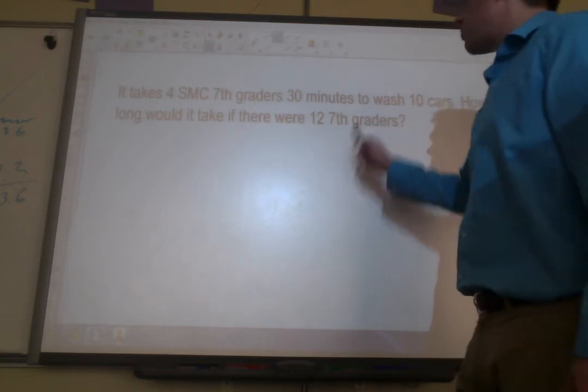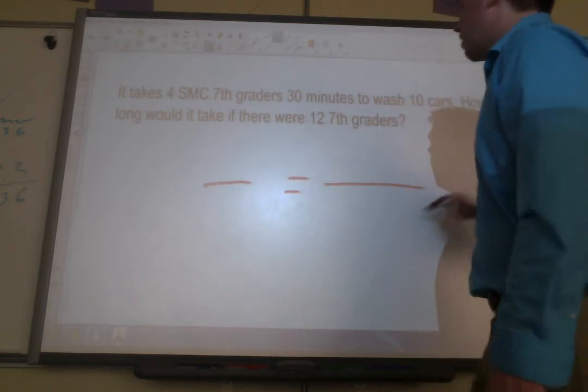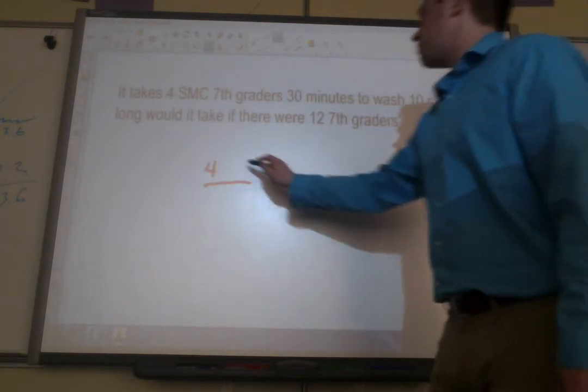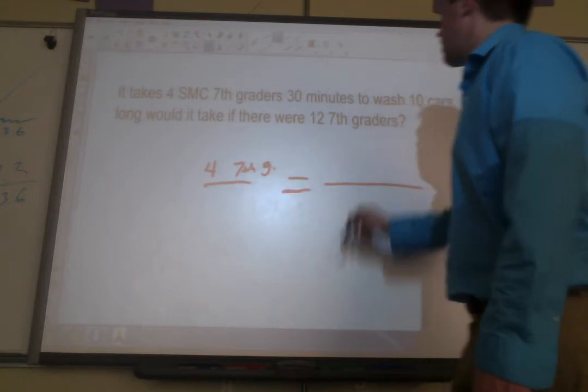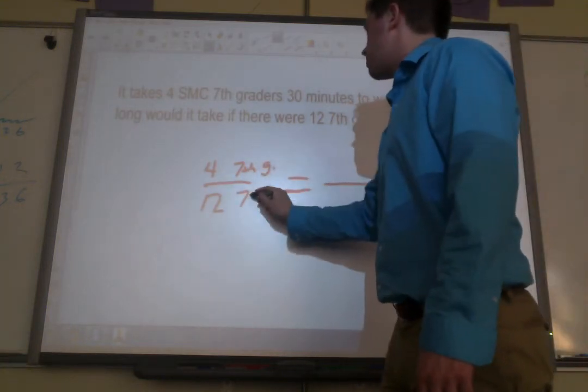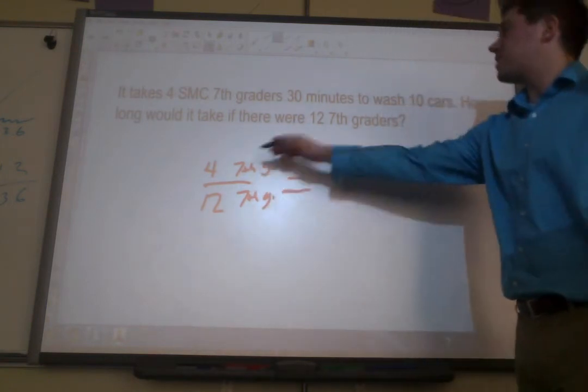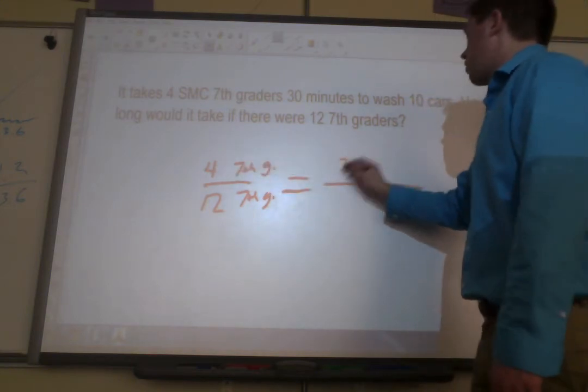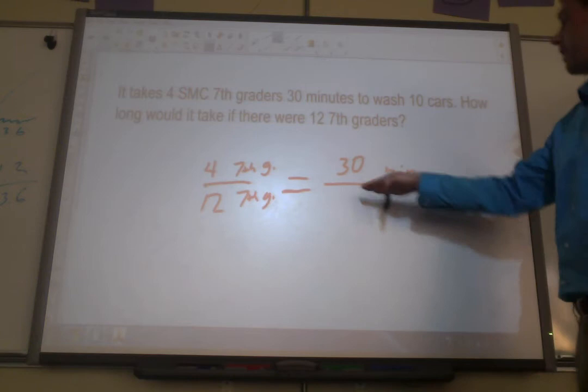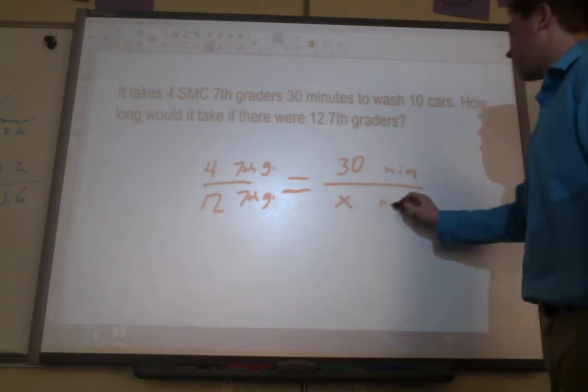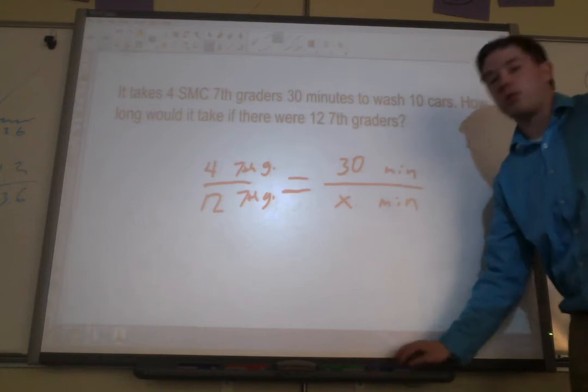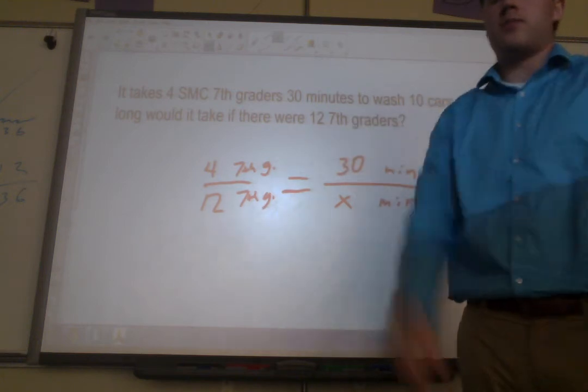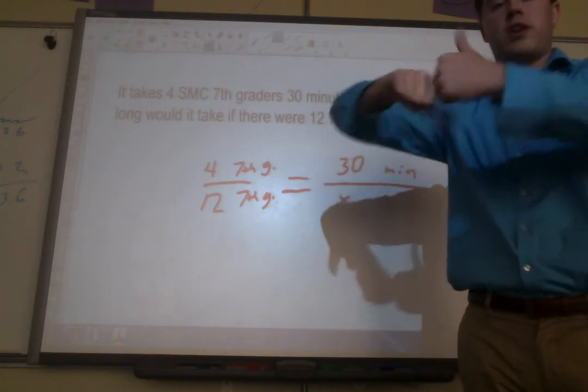Okay, so we've got 7th graders is going to stick with 7th graders on the same side of the proportion. Alright, so first we've got 4 7th graders. And then we've got 12 7th graders. That's going to go on the same side. Okay, and then across from the 4, it says if there's 4 of them, it takes 30 minutes. So across from the 4, we're going to go ahead and put our 30 minutes. And we're trying to figure out how many minutes would it take if there's more kids working. Okay, so we've set it up totally like normal, but here's where we've got to ask ourselves. Is this a direct proportion, where they go up together or down together? Or is this an indirect proportion, where they're the opposite?